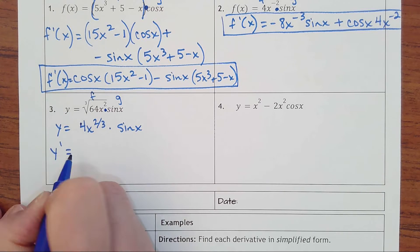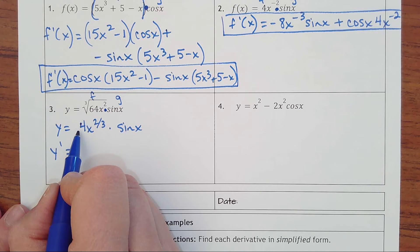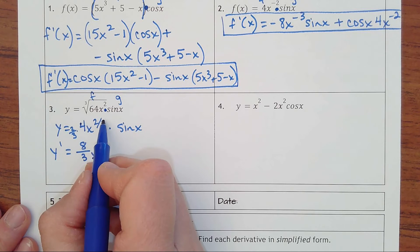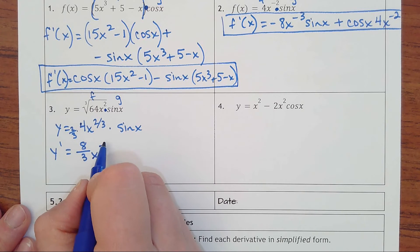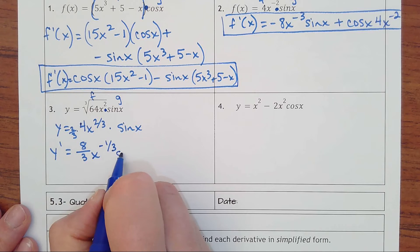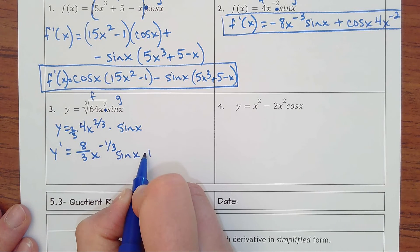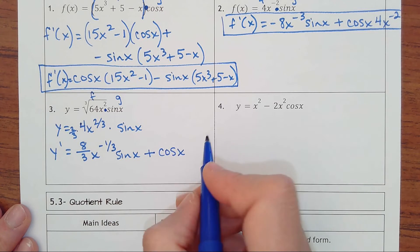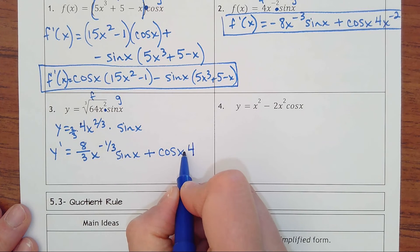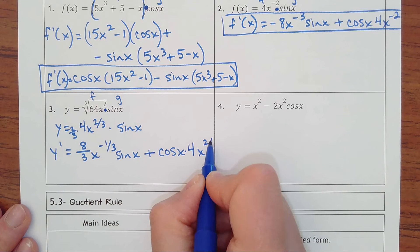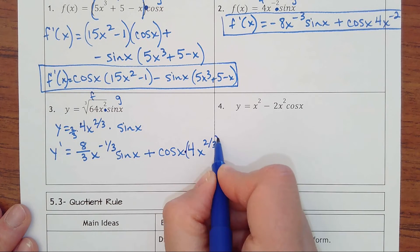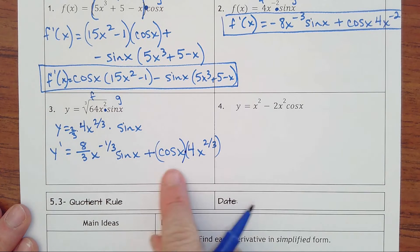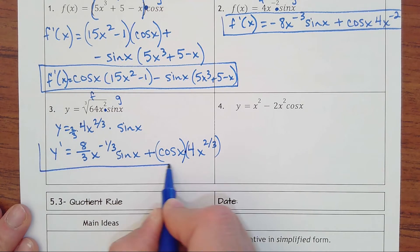So to take the derivative, I'll bring the two-thirds in front. Four times two-thirds would be eight-thirds. X subtract to three-thirds, that would be a negative one-third, sine of x. Plus, derivative of sine is cosine of x. And then I'll have the 4x to the two-thirds. So make sure there's some multiplication here, or some parentheses, or something separating those two. And then that would get you your answer.